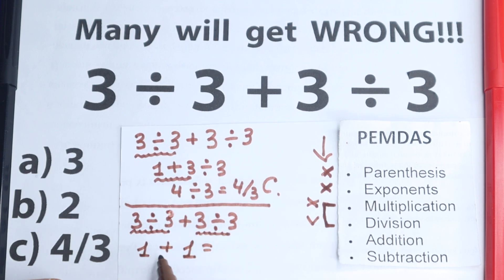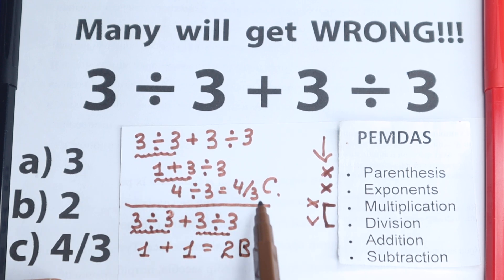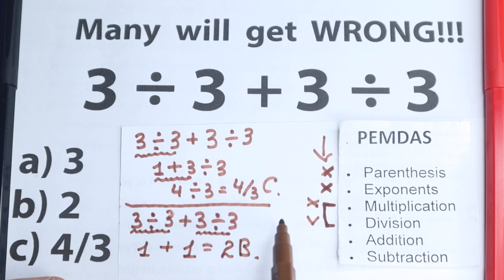So as a result: 1 plus 1 equals 2. And we have this option — option B. As you can see, this is a completely different answer from 4 over 3.